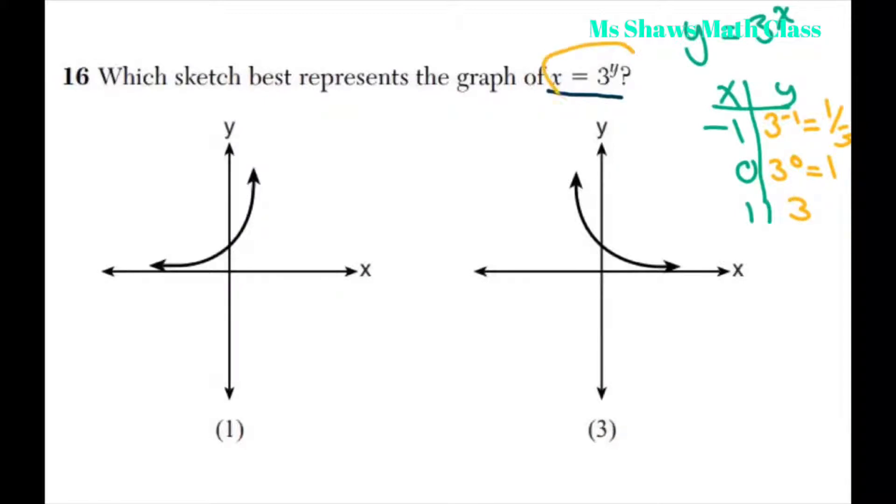Now, since they did the inverse, they switched the x and the y. I'm just going to switch my x and y. So when you do that, you're going to get 1/3 maps to negative 1, 1 maps to 0, and 3 maps to 1.